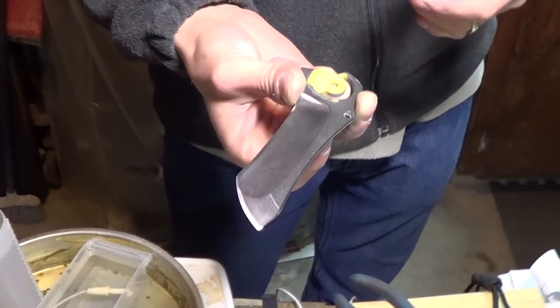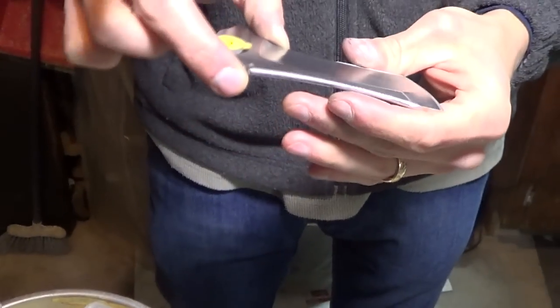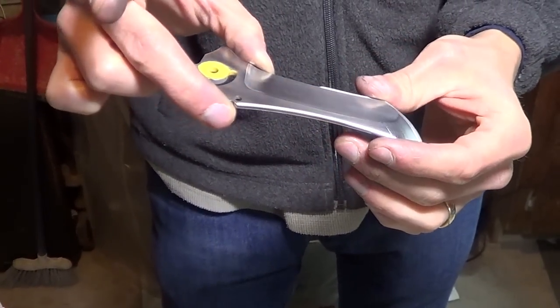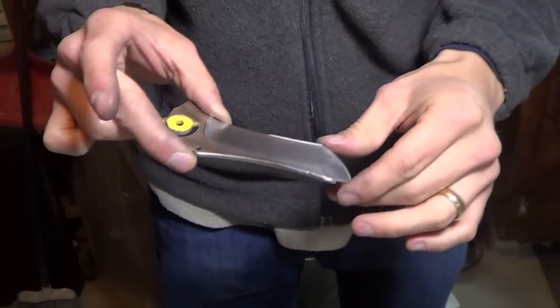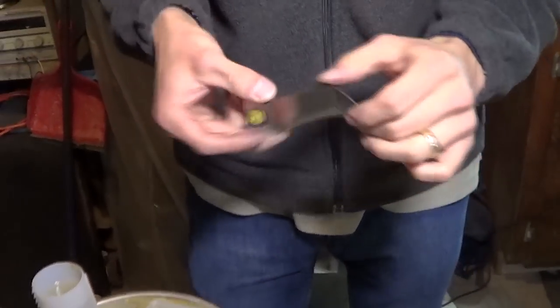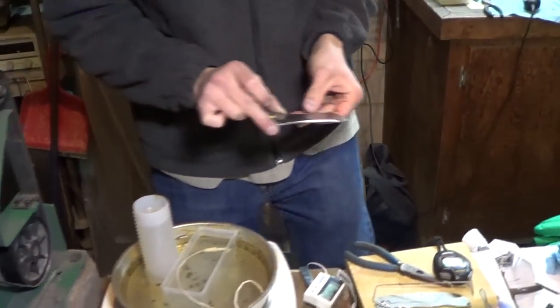This is the blade that we etched in the ferric last night. It's really pitted, unfortunately. But at least it's an even finish and it looks kind of cool. It's got some good contrast to it, so it should work really good for this. Let's just etch her up.